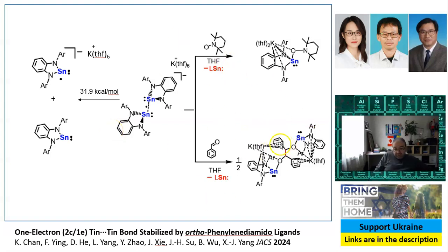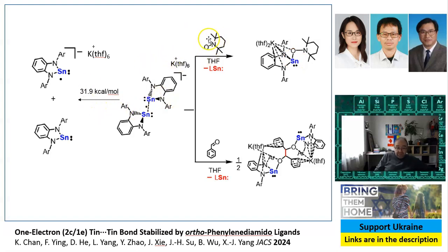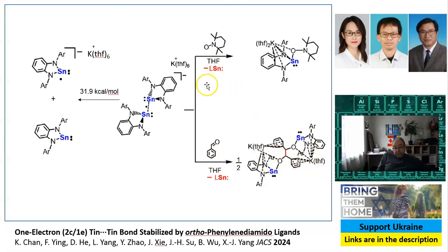Here's some reactivity that shows this bond can be broken upon reaction with certain molecules. In both reactions shown, this bond is broken and the stannylene is released. In one case the radical reacts with a TEMPO radical, making a tin-oxygen bond while potassium stays. In the other case it reacts with oxygen: a carbon-centered radical forms with stannylene attached to oxygen, and it dimerizes. These reactions also prove that this is indeed the proposed structure.